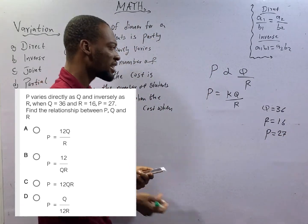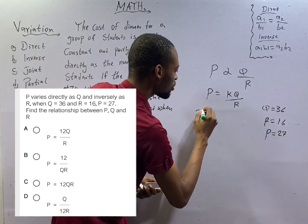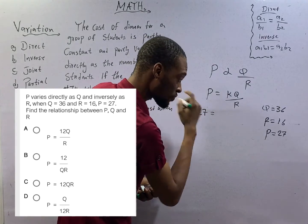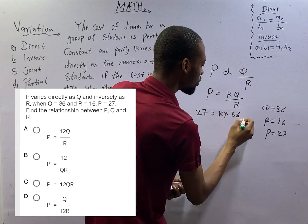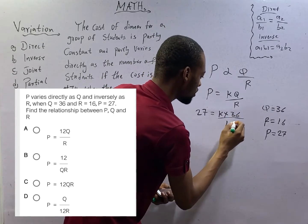If that is correct, it means that P, 27, equals K times Q, 36, over R, 16. Cross-multiplying: 27 times 16 equals 36K.